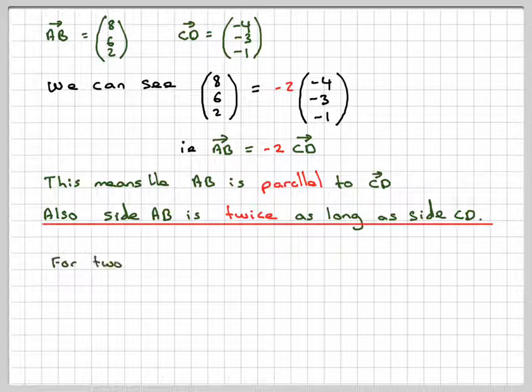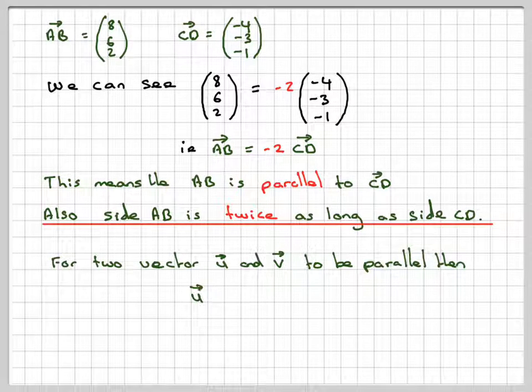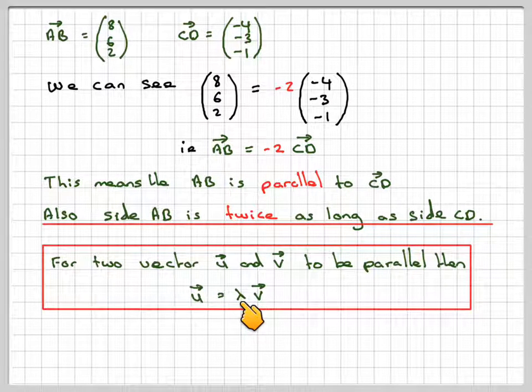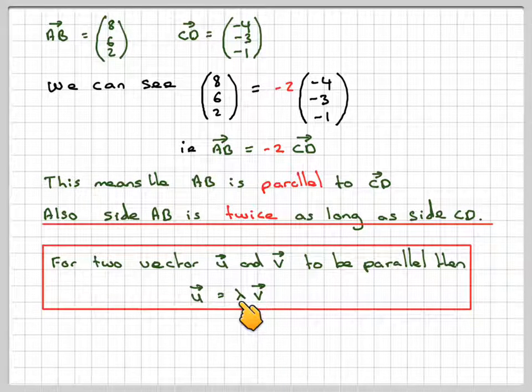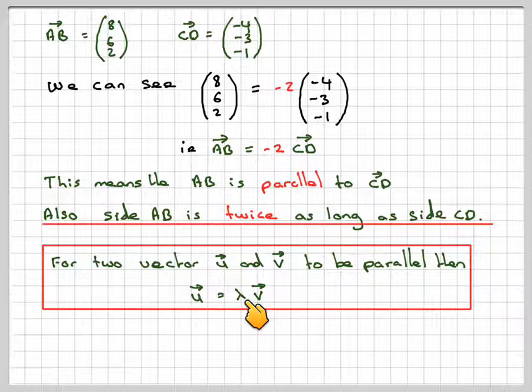In general, for two vectors U and V to be parallel, then U has to be some number, lambda we call it, times the other one. In this case, lambda was minus 2. So one vector must be a multiple of the other. Lambda could be a fraction, negative, or positive number.